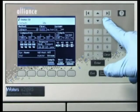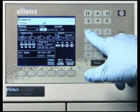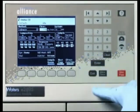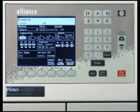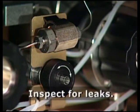After the inline filter is installed, enter a flow rate of 1 milliliter per minute and flush the system for 10 minutes. Inspect the inline filter for leaks and tighten fittings as required.